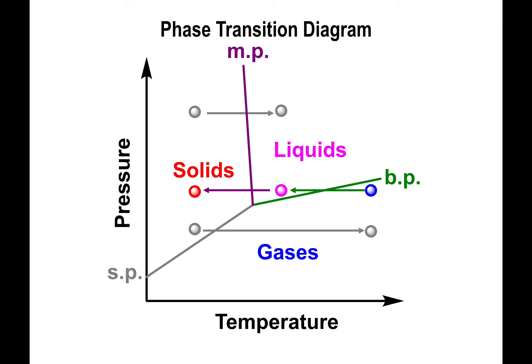We'll do one more example for the phase transition diagram problems. In this particular example we're going to go backwards — we're going to start with a gas, turn the gas into liquid, and eventually turn that liquid into solid. So we're ultimately going from gas all the way to solid, undergoing two transitions in the process.